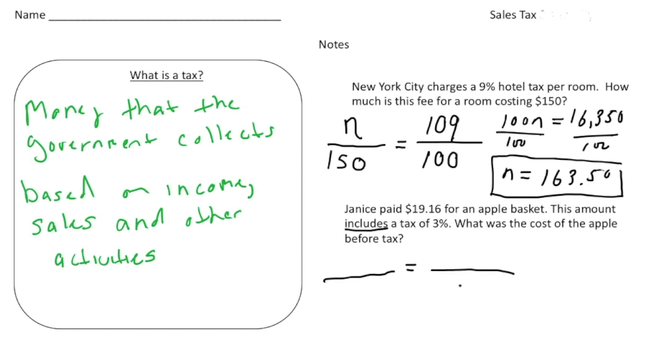All right, so as always, this is going to be 100 right here. And altogether, Janice paid 103%. So this is going to be 103 on the top, right? Because again, the way we've got 103 is we did 100% plus that extra 3%. All right, now the $19.16, because that includes the tax, that goes across from the 103.